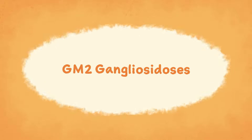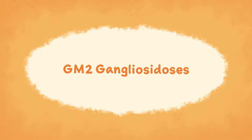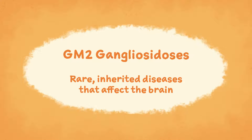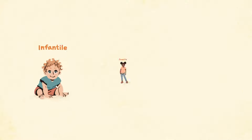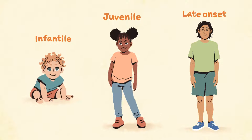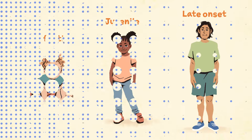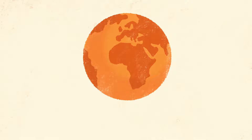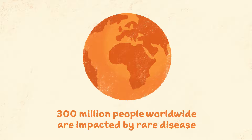Tay-Sachs and Sandhoff disease are part of a group of diseases called GM2 gangliosidoses. They are rare inherited diseases that affect the brain. There are three main variants, classified by the age of onset: infantile, juvenile, and late onset. A condition is considered rare if it affects less than one in two thousand people. There are approximately 300 million people worldwide impacted by rare diseases.